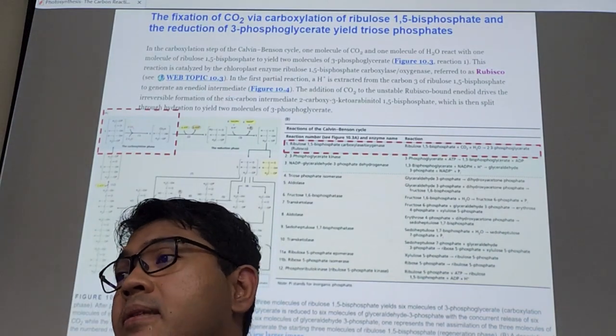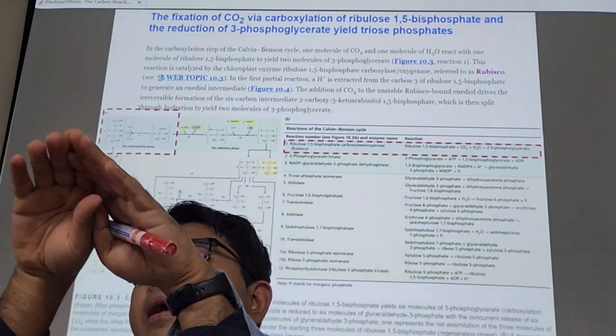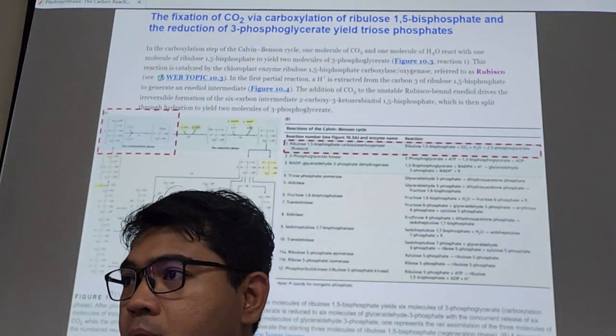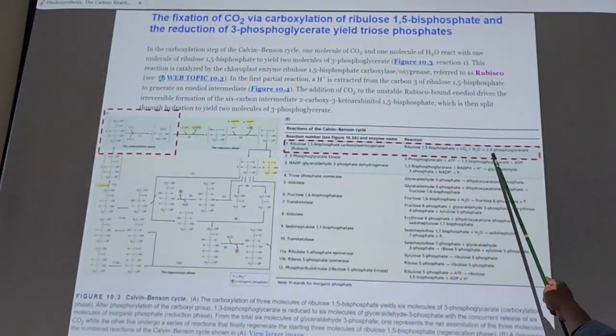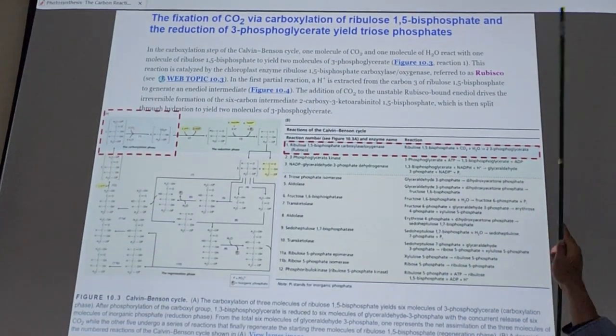RuBP five carbon, CO2 one carbon, you bring together you will get six-carbon molecule. These six-carbon molecules super unstable, maybe like less than a second it will quickly break down. It breaks down, it becomes three phosphoglycerate, two molecules of it.